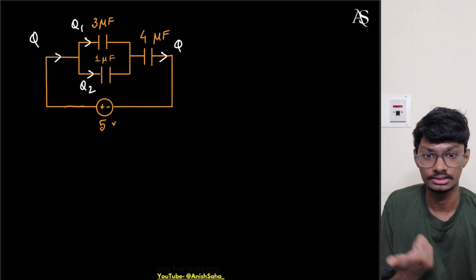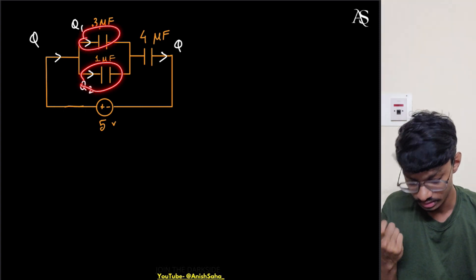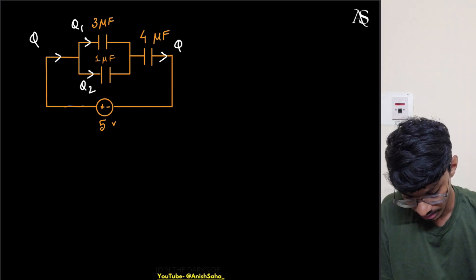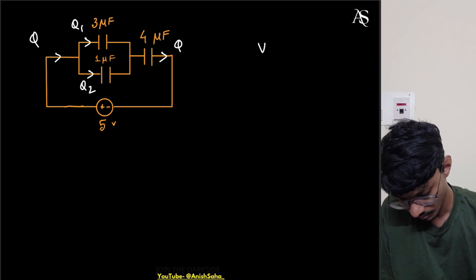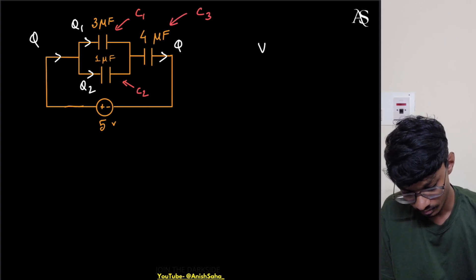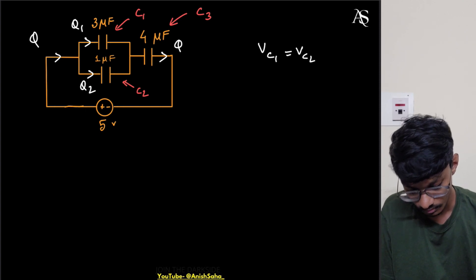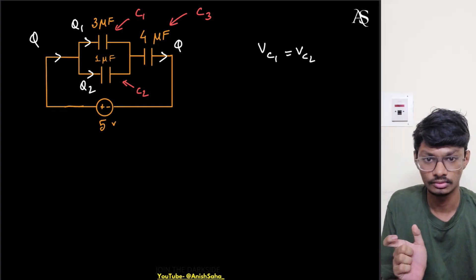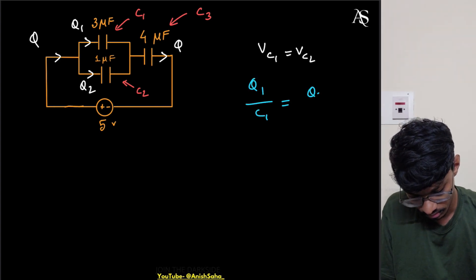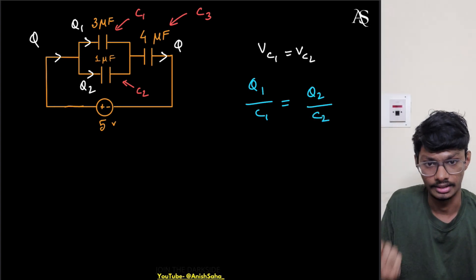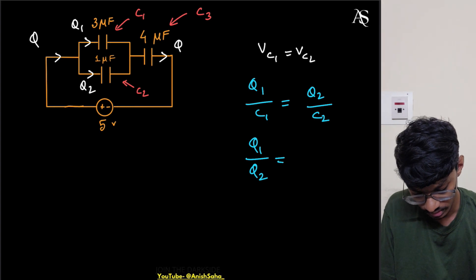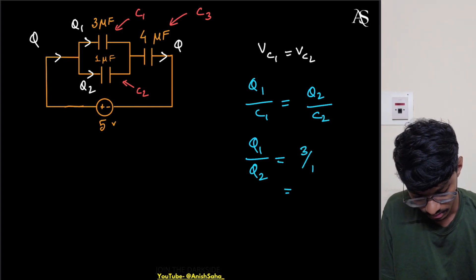Let's write the charge conservation equations. One thing we know is that the voltage across C1 and C2 should be the same, so we can relate the charges between them. Let me name this as C1, this as C2, and this as C3. So VC1 should equal VC2. How do we relate it with charge? Basically VC1 equals q1 by C1, so q1 by C1 should equal q2 by C2. The charge is directly proportional to the ratios of the capacitances, so q1 by q2 equals C1 by C2, which is 3 by 1.